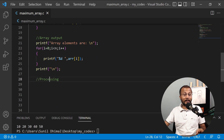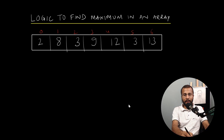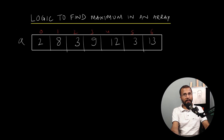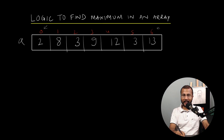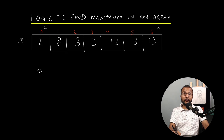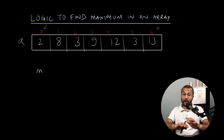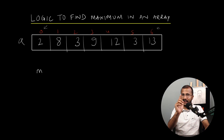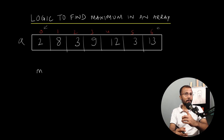Now the real coding begins — we need to do the processing. How do we find the maximum element in an array? Let's test our logic. Here is an array ARR with seven elements from index zero to index six. When you're writing a program, you have to think like a computer. The computer cannot access all elements at once — it can only visualize one number at a time.